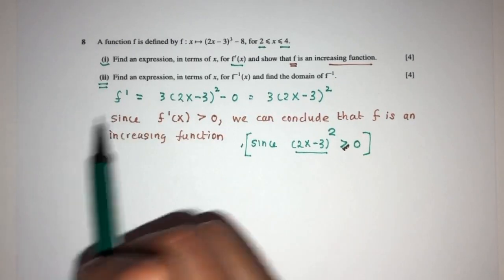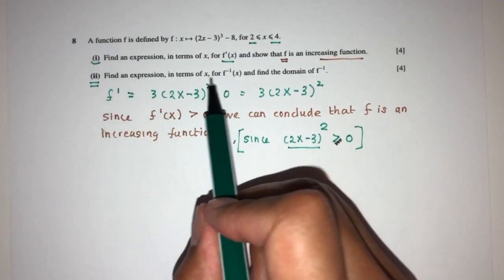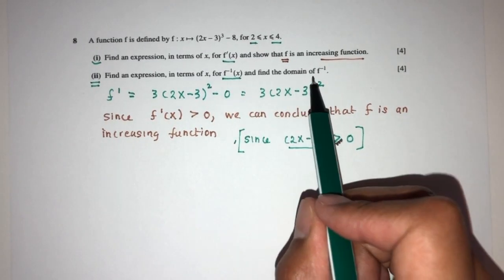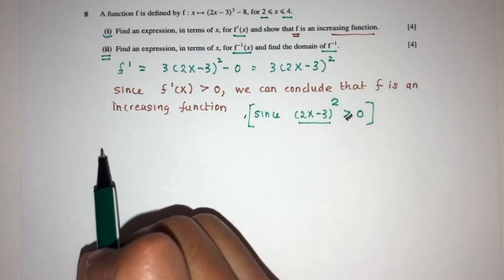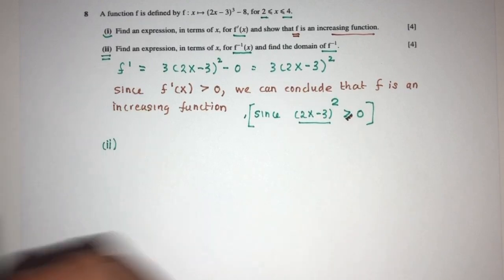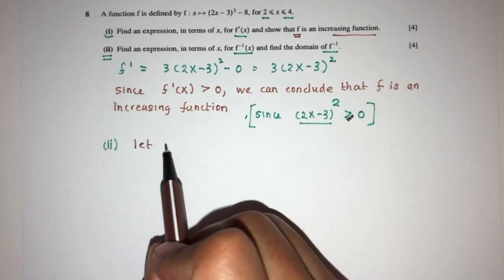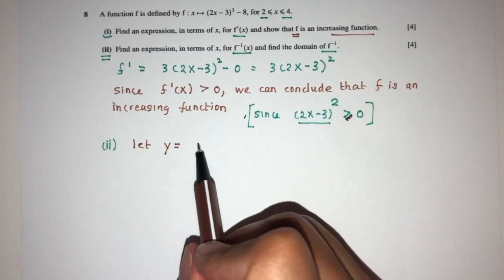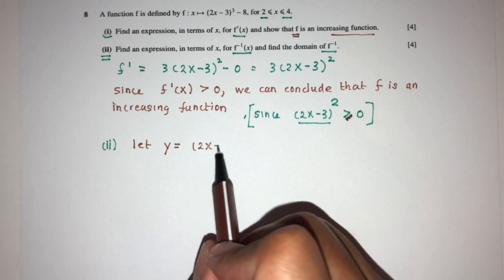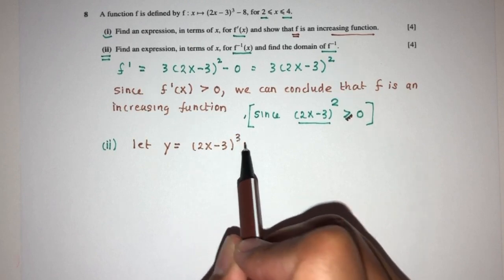Now, part 2, we have to find an expression in terms of x for f inverse, and find the domain of f inverse. So, pretty easy, one by one. In terms of x, first, f inverse, we have to let y equal to f. That will be (2x - 3)^3 - 8.